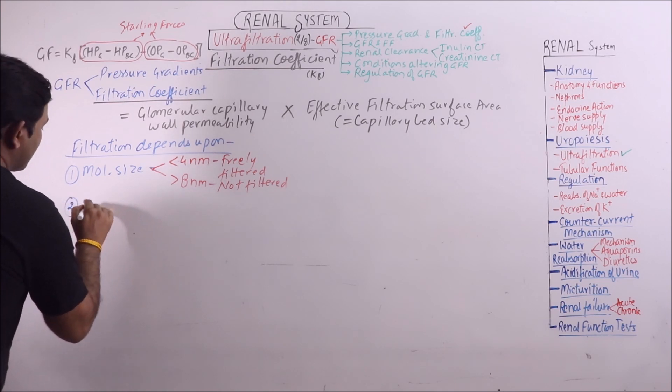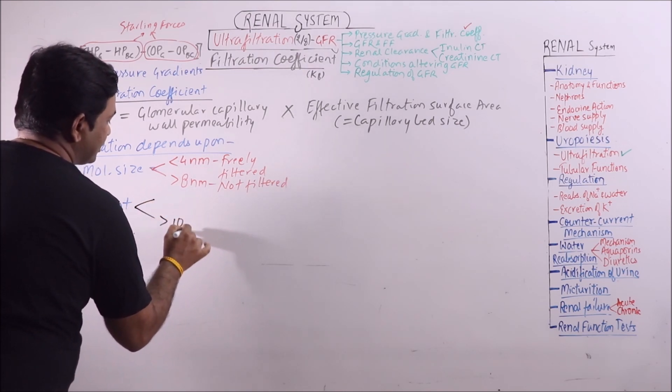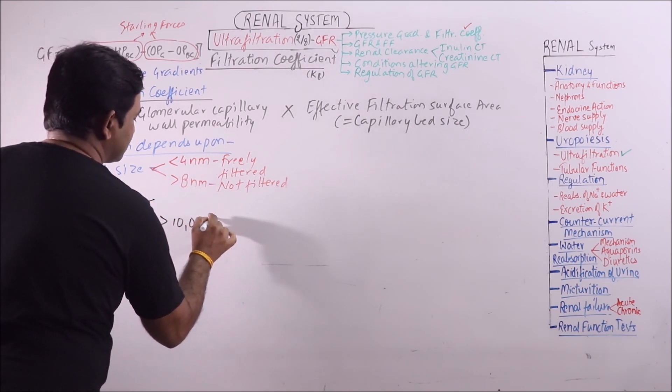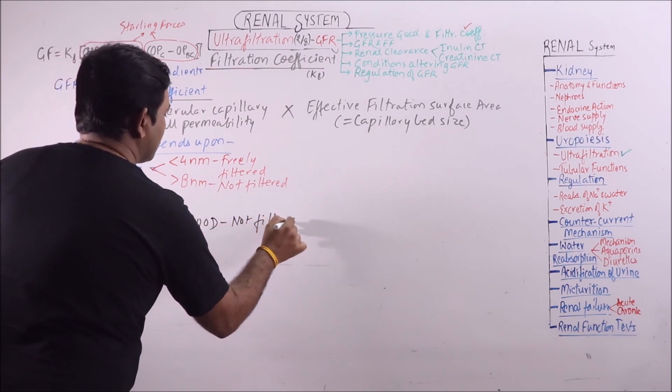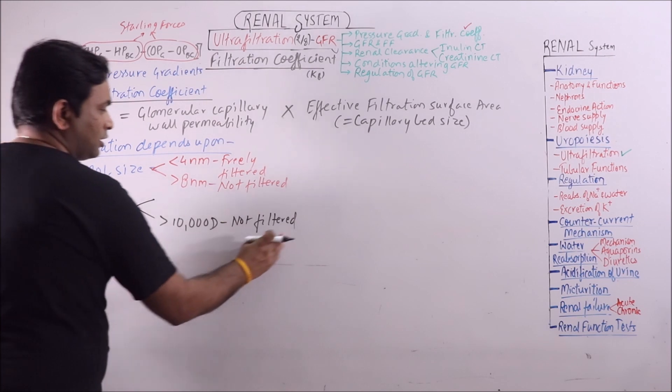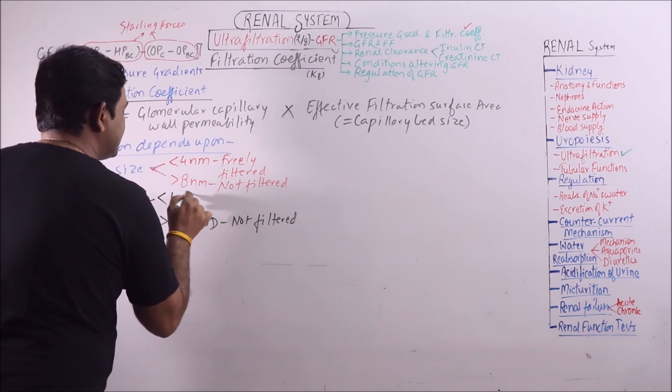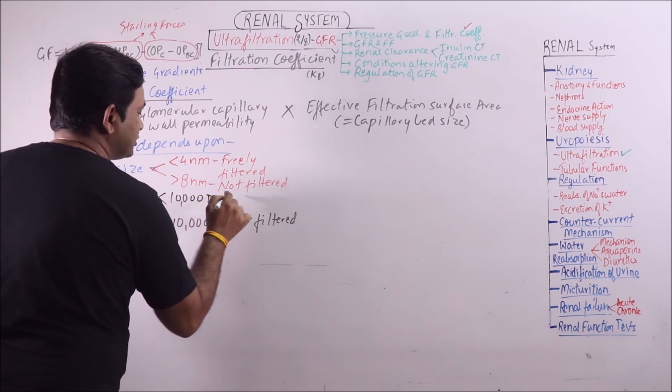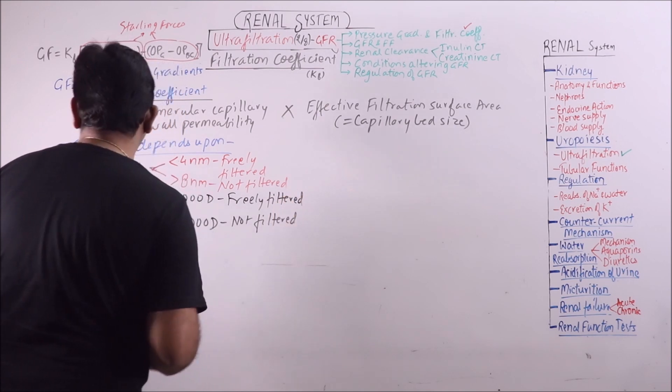If molecular weight is more than 10,000 daltons, it is not filtered or it is restrictedly filtered. And if it is less than 10,000 daltons, then it is freely filtered.